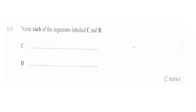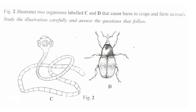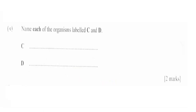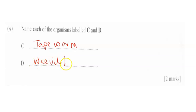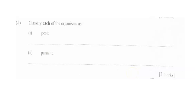The first question asks us to name each of the organisms labeled C and D. Looking at the diagram carefully, C is tapeworm, and then D is weevil. So we write: C is tapeworm, D is weevil. One mark each.